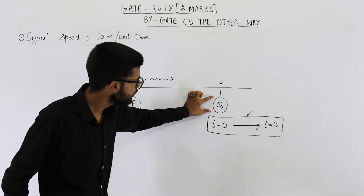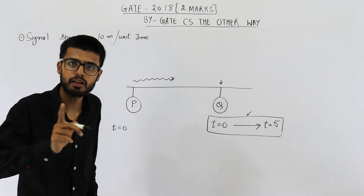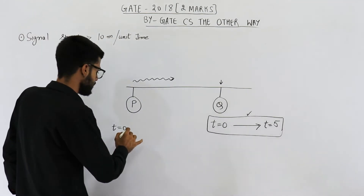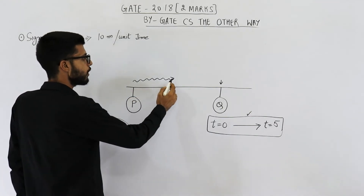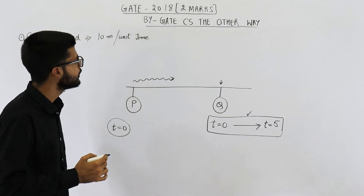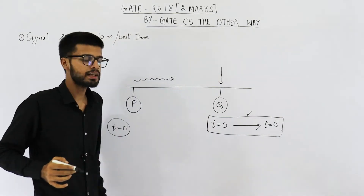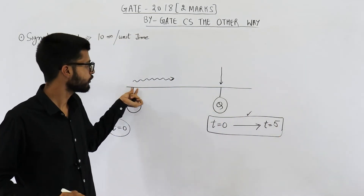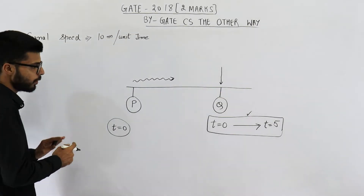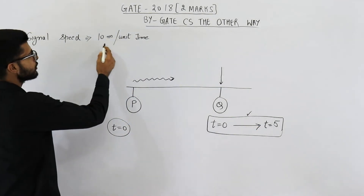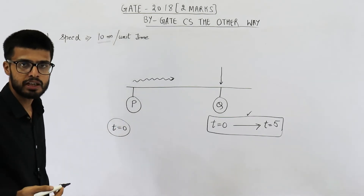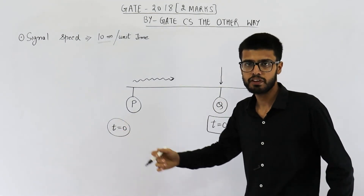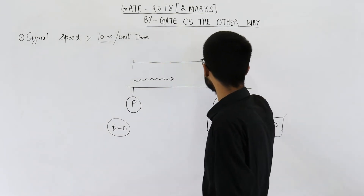If P's signal reaches Q before T=5, then Q will see that someone is sending data, the channel is busy, and Q will wait — avoiding collision. So the signal has a maximum of five time units to travel from P to Q. In five time units, at 10 meters per time unit, the signal travels 50 meters. Therefore, the maximum allowed distance between P and Q is 50 meters.